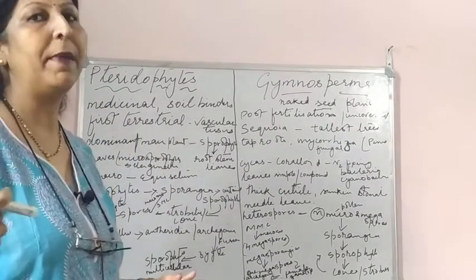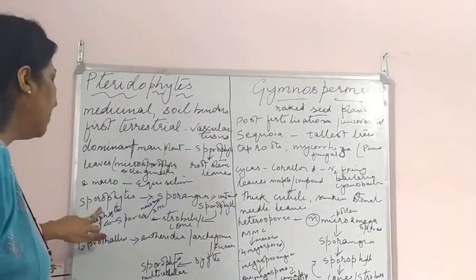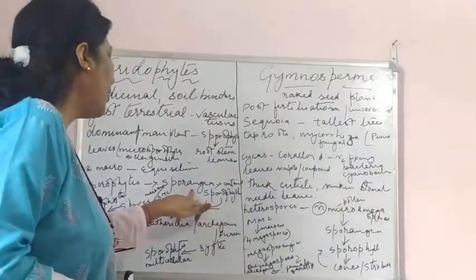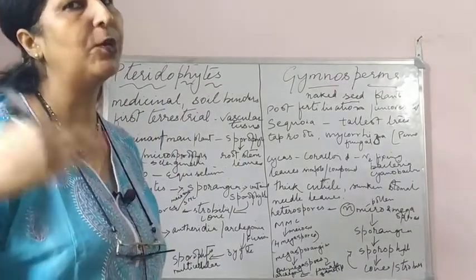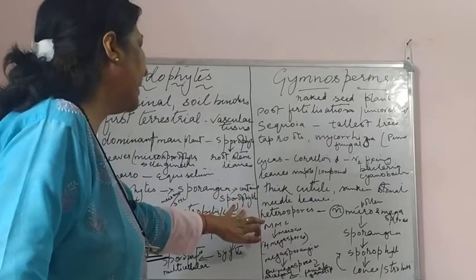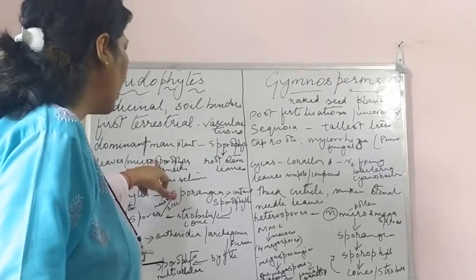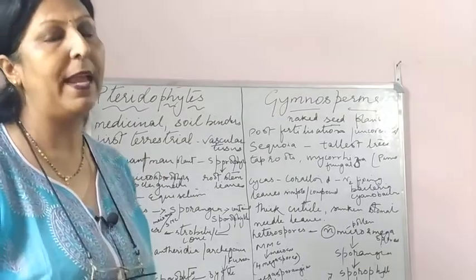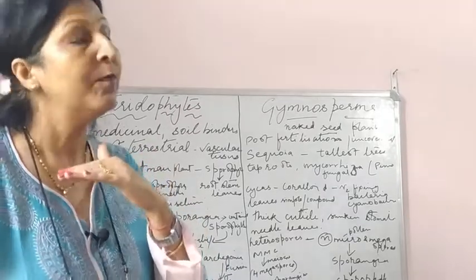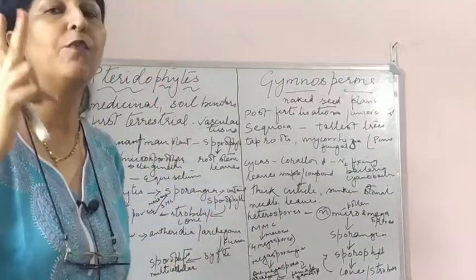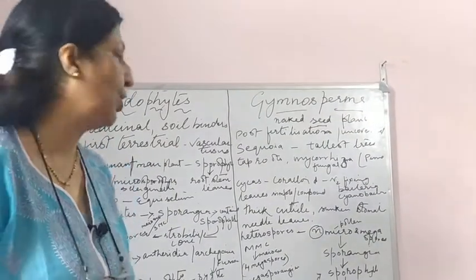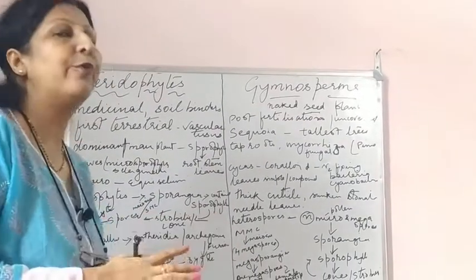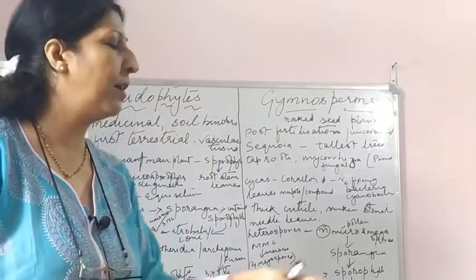The sporophyte is the main dominant plant body. Sporophytes bear sporangia, and these sporangia are contained in sporophylls - both megasporangia and microsporangia, that is female spores and male spores. Remember: micro is for male and mega is for female. Sporophylls are leaflet structures, and the sporangia are arranged in a cone-shaped structure called a strobilus.